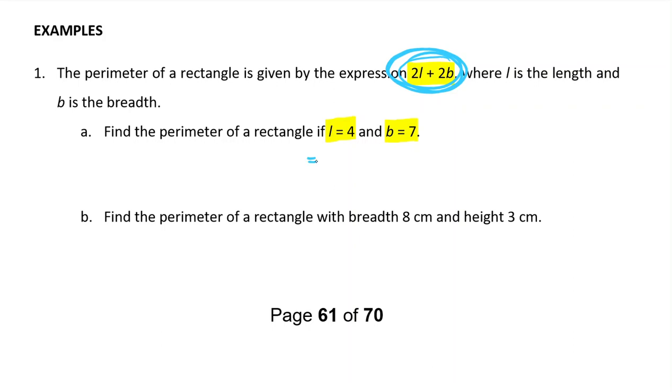So 2L would become 2 times 4 because L was 4. And because they were next to each other, I need to put the times sign in. Then I want to plus 2B, which will be 2 times 7. Then we can put that in our calculator and get the answer, which is 22. So the perimeter of that rectangle would be 22.